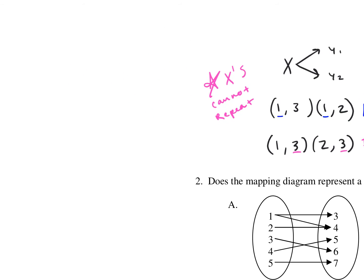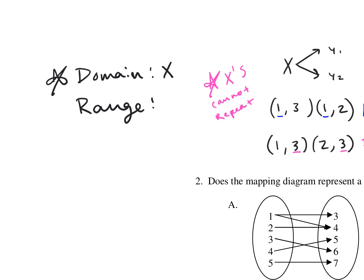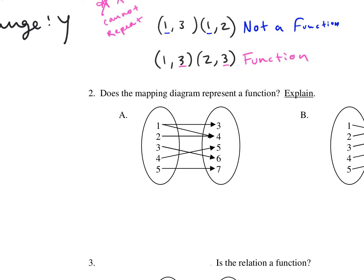For domain and range: domain is the x values, and range is y. In our mapping diagram the x's come first, then the y's. Is diagram A a function? It's not a function — because I have two arrows coming out of the 1. What number makes it not a function? 1, because there are two arrows coming out of it.